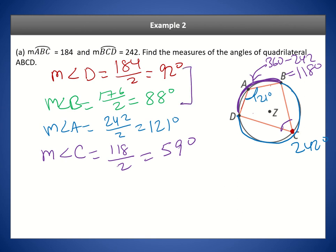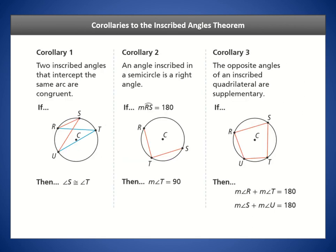Notice that opposite angles add up to 180 degrees, and the two opposite arcs add up to 360 — so the angles are always half of 360, which is 180. That's corollary three: the opposite angles of inscribed quadrilaterals are supplementary. Corollary one states that if two inscribed angles have the same intercepted arc, the angles must be equal. Corollary two states that an angle inscribed in a semicircle — where one side is a diameter — must be a right angle, because it's half of 180, which is 90 degrees.